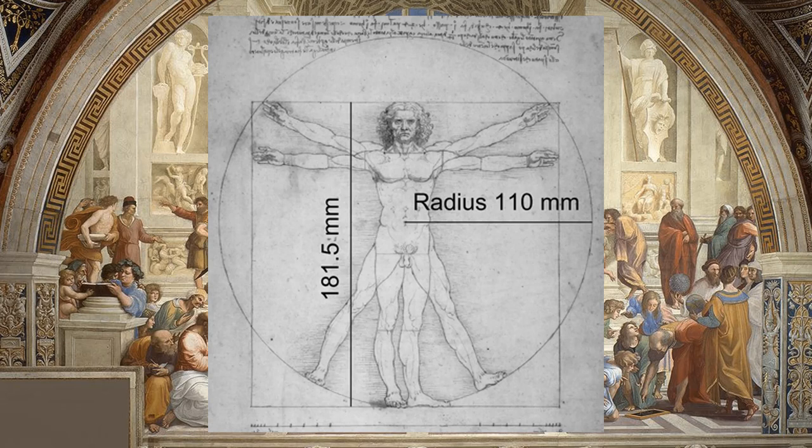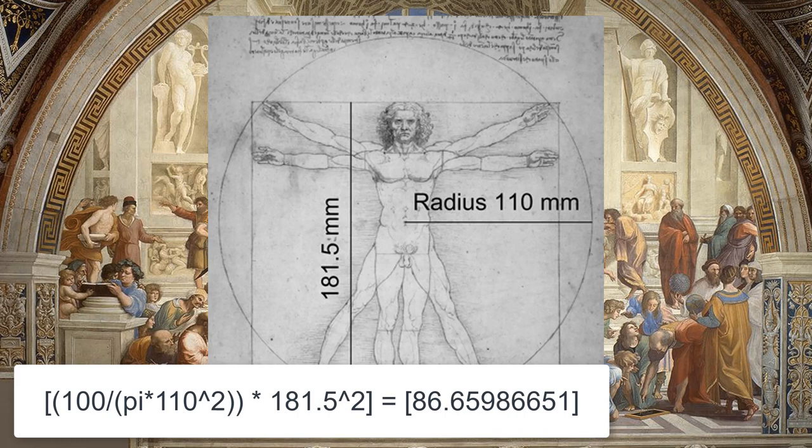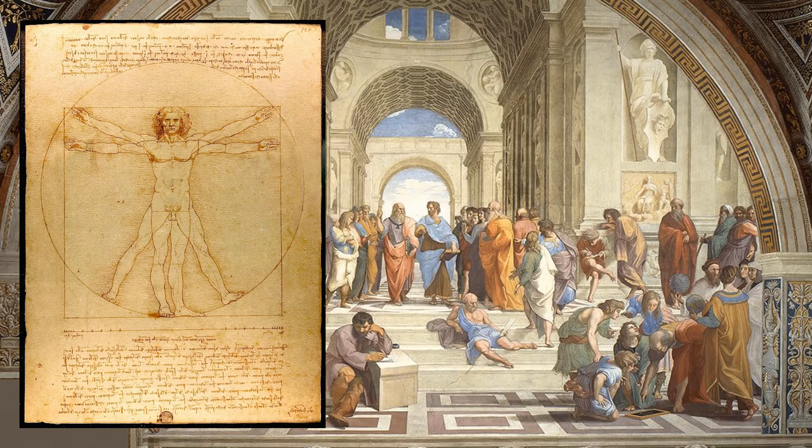Unfortunately, this is not the closest approximation in the world, with the area of the square being only 86.7 percent the area of the circle. However, two much closer approximations of squaring the circle can be found within the Vitruvian Man.